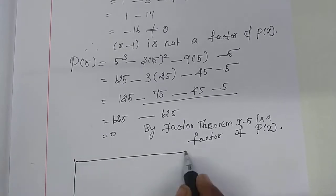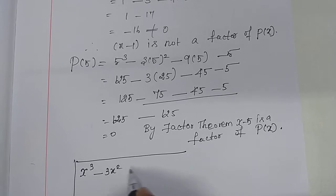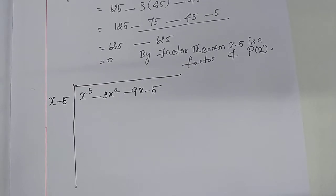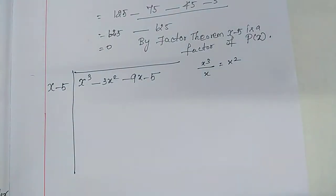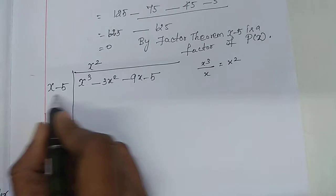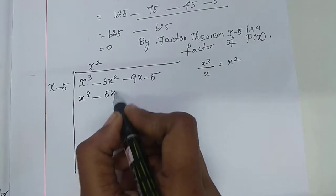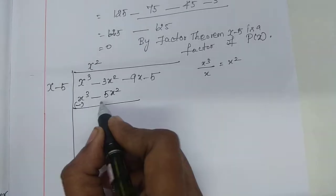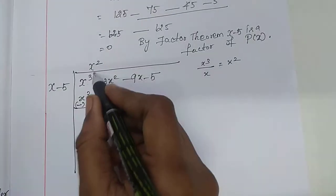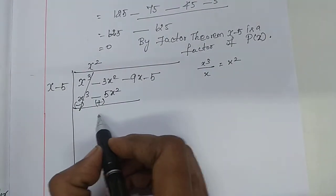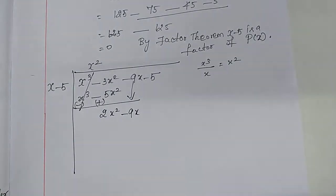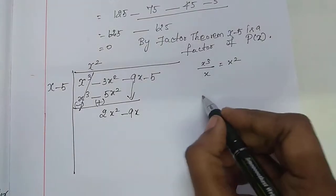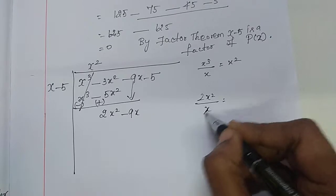So, put the long division now: x cube minus 3x square minus 9x minus 5, with divisor x minus 5. Do the long division. Then, x cube divided by x equals x square. Multiply these two terms with x square: we get x cube minus 5x square. Change the sign. These two terms cancel. And minus 3 plus 5 gives plus 2x square. Bring down the term minus 9x. Now, 2x square divided by x gives 2x.